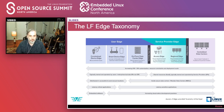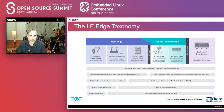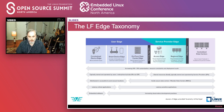On-prem data centers have moderately scalable compute, limited by footprint, available real estate, power, and cooling — not as scalable as the centralized cloud. But it's still good compute on this side of the last mile network, so latency is less of a variable. A big difference between this and other edges is that it's still in a physically secure data center.